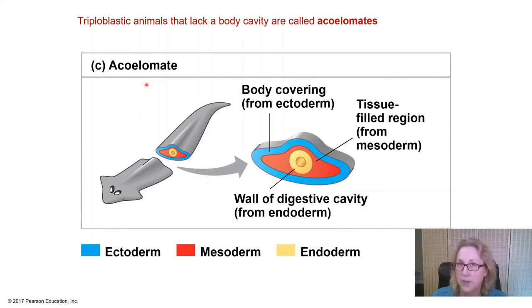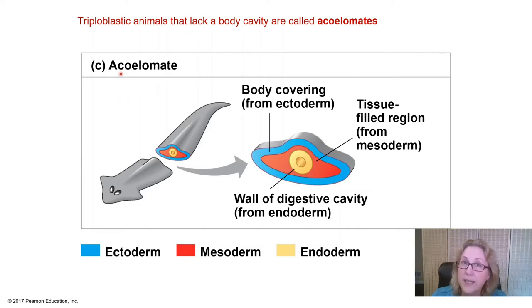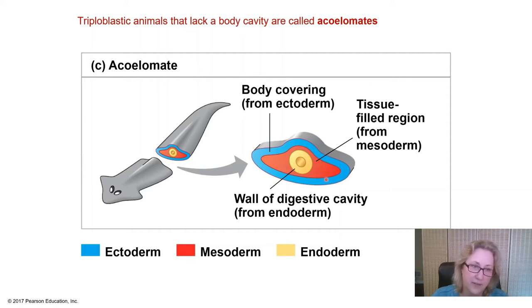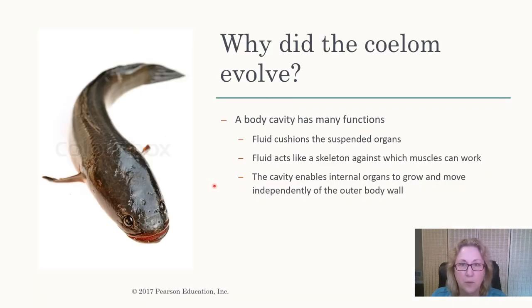Animals that don't have a coelom — like flatworms, which you looked at under the microscope — are called acoelomates. The mesoderm is just solid in these animals. Although this is a disadvantage compared to having a coelom, these animals seem to do just fine — they're certainly very abundant and diverse.